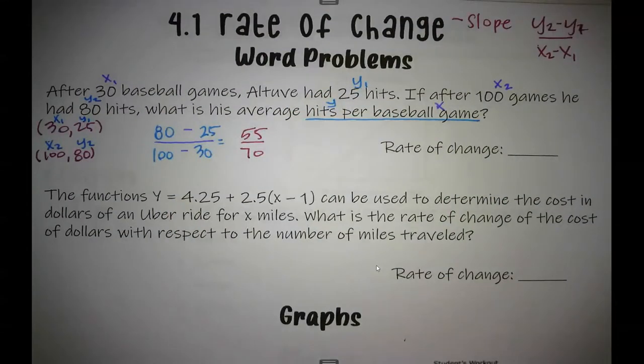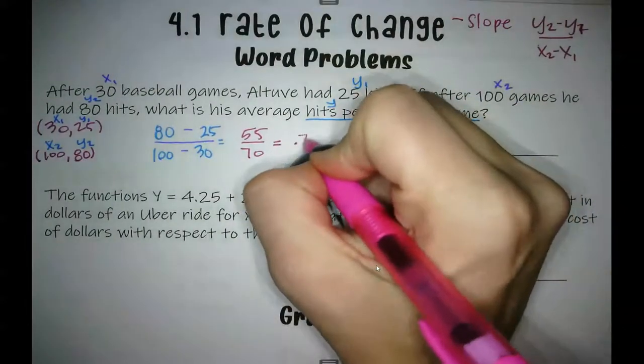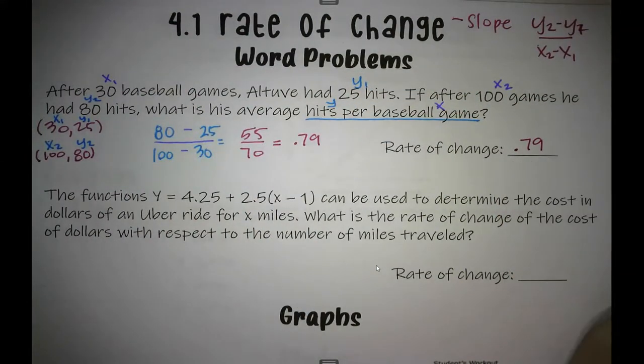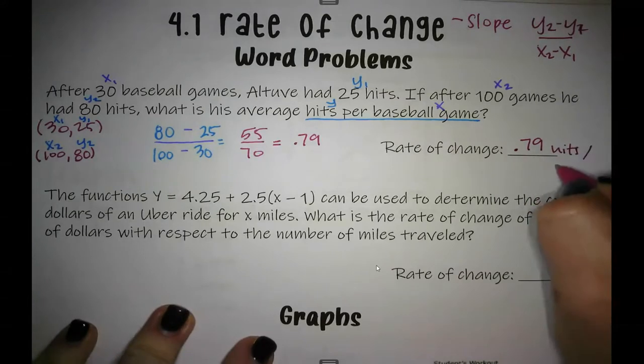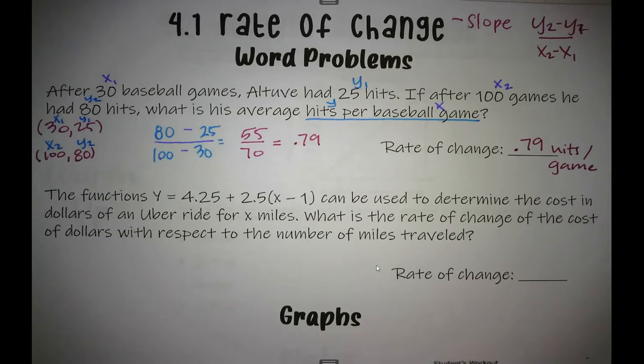55 over 70 hits per baseball game doesn't really tell me a whole lot in this real world scenario. So I'm going to change that to a decimal number. And I get, as my rate of change, 0.79, and this is hits per game. And now I know that he has 0.79 hits per game.